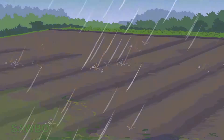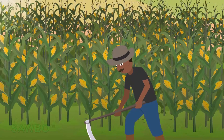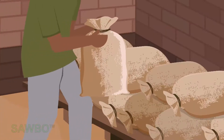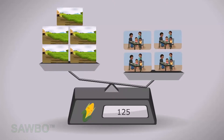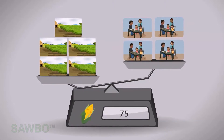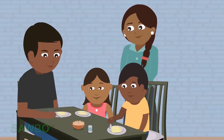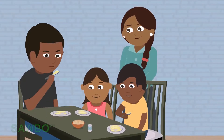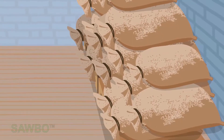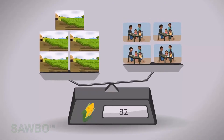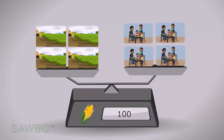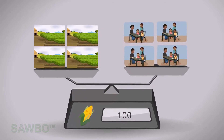As it rains, the farmers grow maize. When they harvest it, the price goes down to 75 units per bag because of an oversupply. People continue to eat the maize, which reduces the oversupply of the crop. As supply and demand become equal, the price goes back to 100 units per bag.